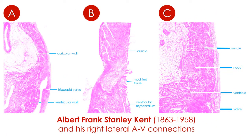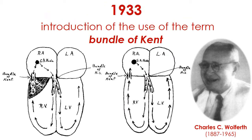The first atrioventricular accessory pathways were described by Stanley Kent, although his work was bitterly criticized by opinion leaders in heart pathology and physiology at the beginning of the 20th century. In spite of these criticisms, the term 'bundle of Kent' was used by Wolff, Parkinson, and White in 1933 to explain the electrocardiogram of patients with WPW syndrome and also the mechanism of the most frequent type of non-pre-excited tachycardia developed by these patients.